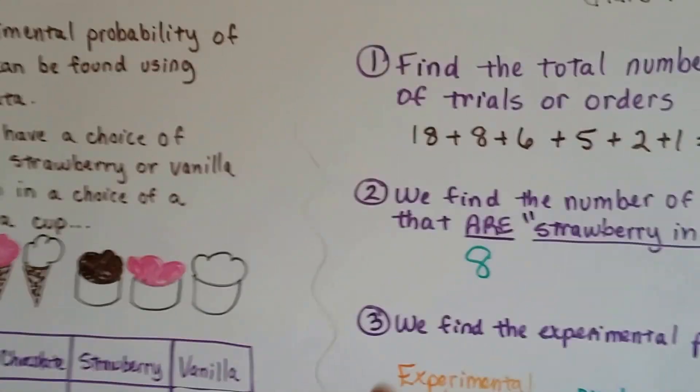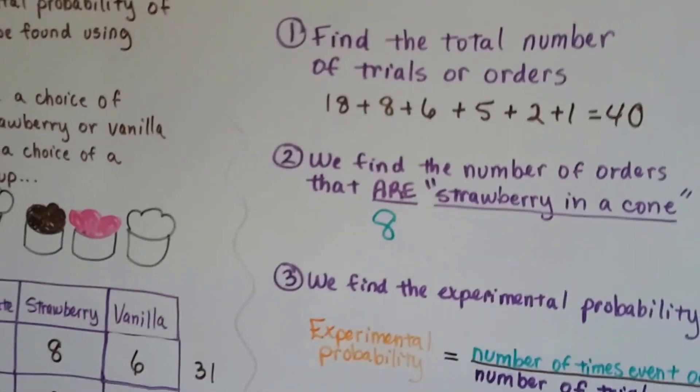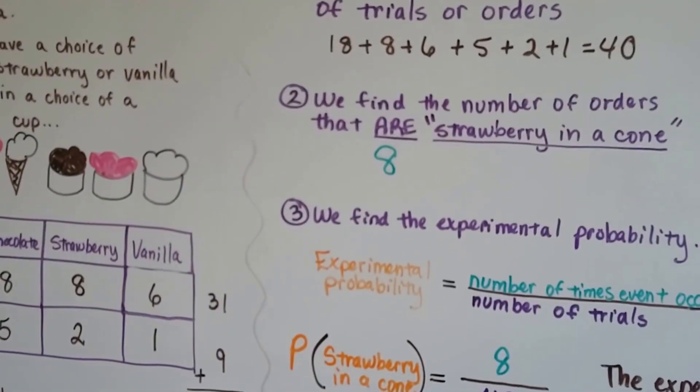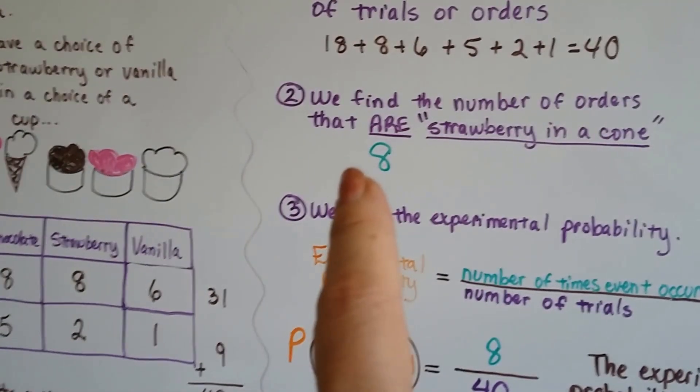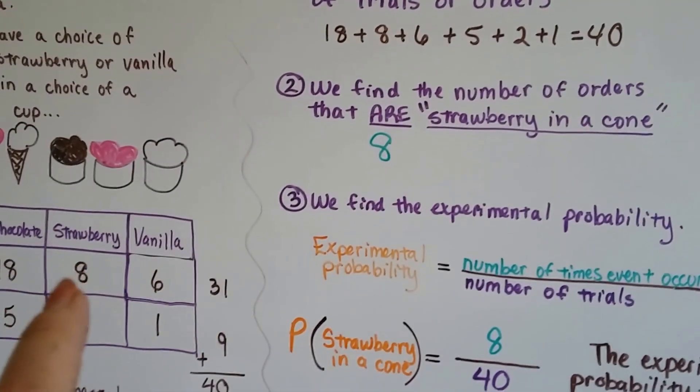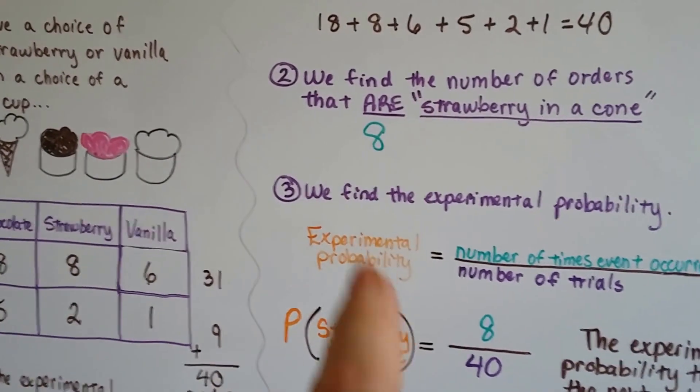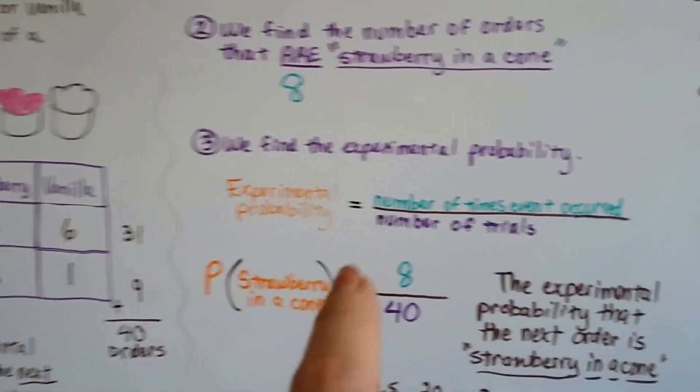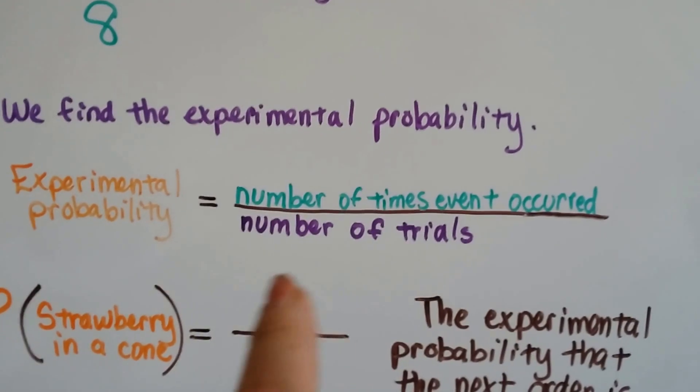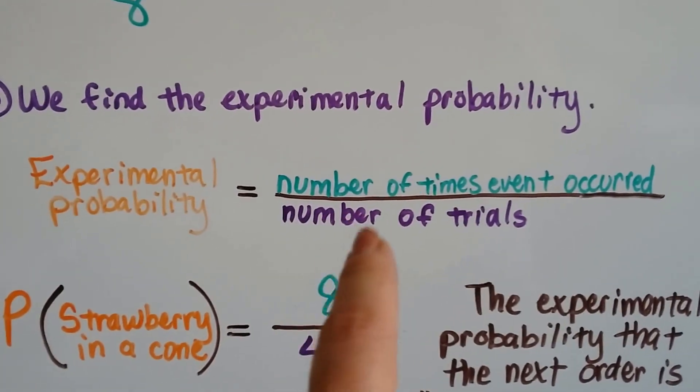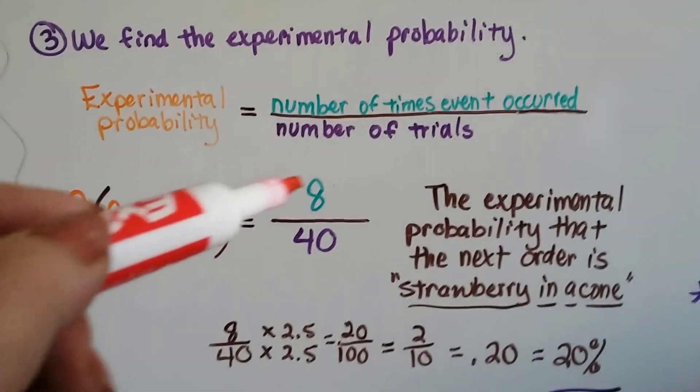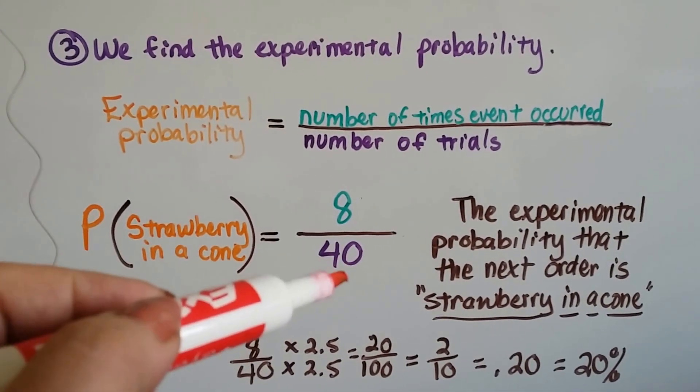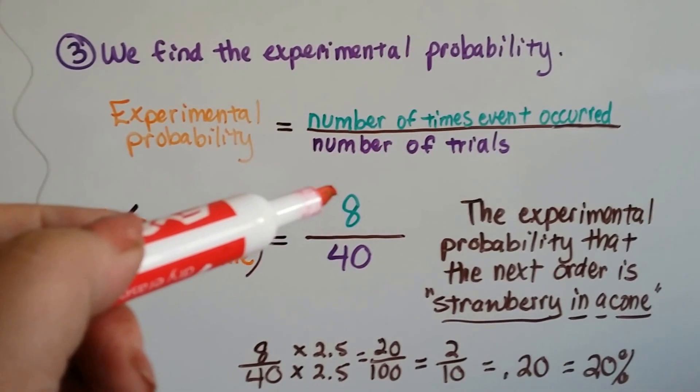So the first thing we're going to do is find the total number of trials, or of orders. So we knew there were 40 orders. We find the number of orders that are strawberry in a cone. Well, that was 8. We find the experimental probability. Remember, that's the number of times it occurred over the number of trials. So, that's 8 over 40. There were 40 orders, and 8 were strawberry in a cone.